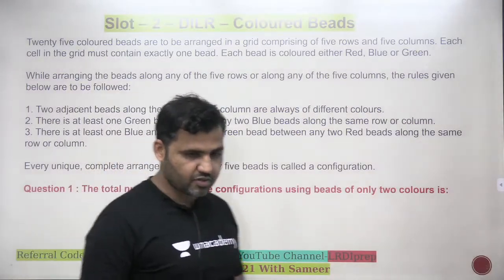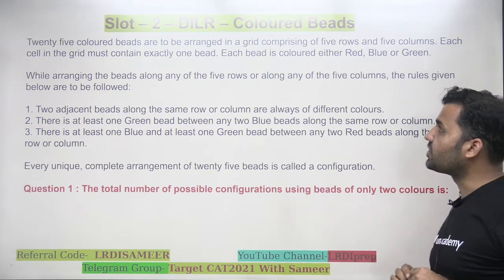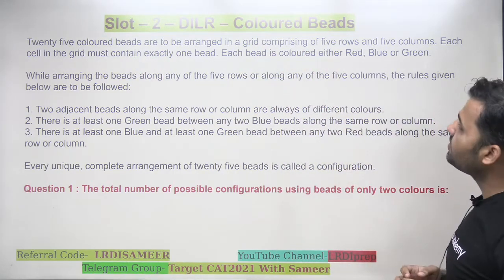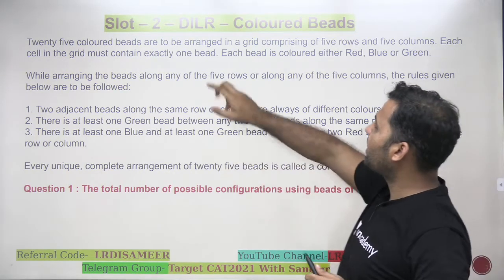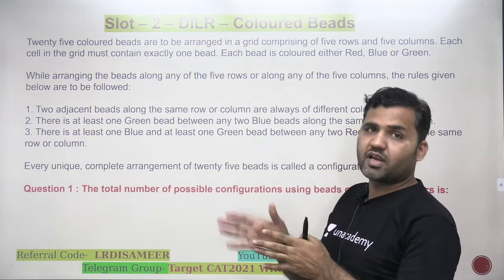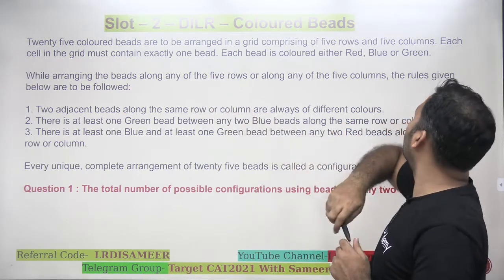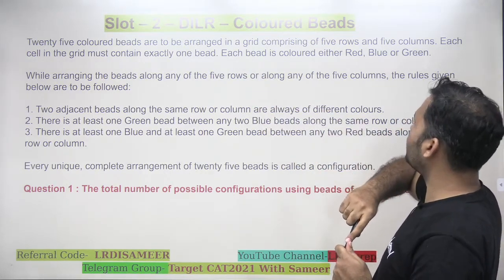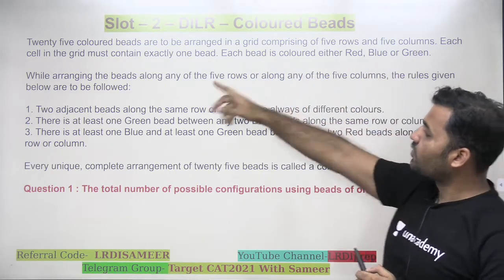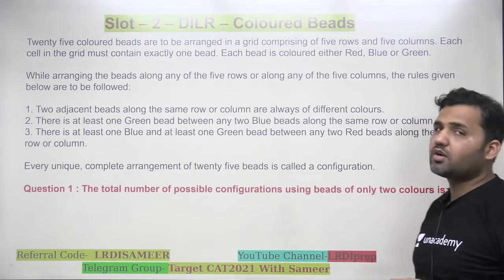Let's have a look at the set we are going to discuss. It's very important that you first understand the basic information. 25 colored beads are to be arranged in a grid comprising 5 rows and 5 columns. Each cell in the grid must contain exactly one bead — so you have to make a 5x5 matrix with 25 cells. Each bead is colored either red, blue, or green. While arranging the beads along any of the 5 rows or 5 columns, the rules given below are to be followed.